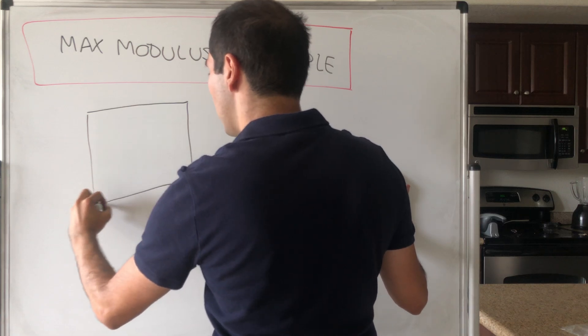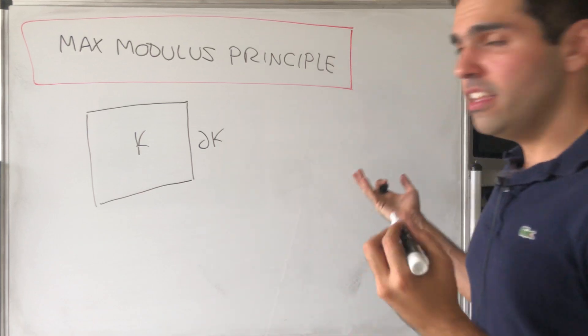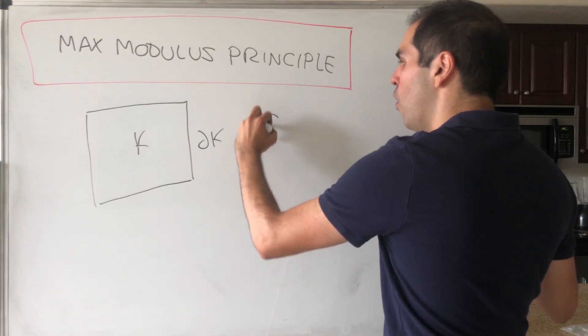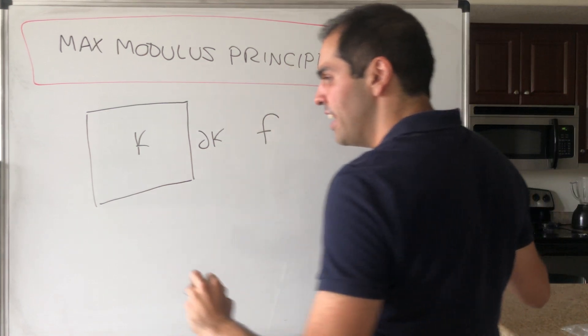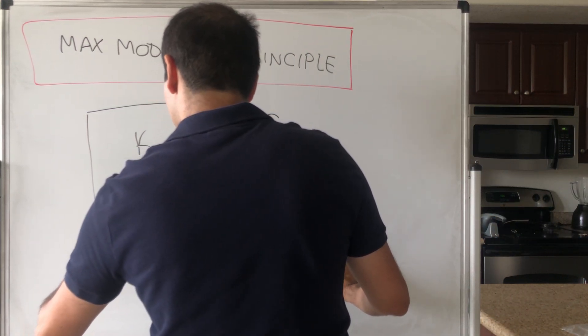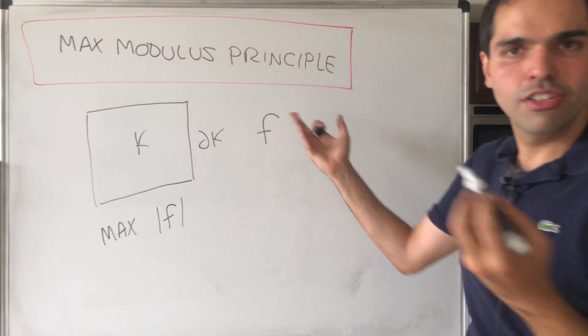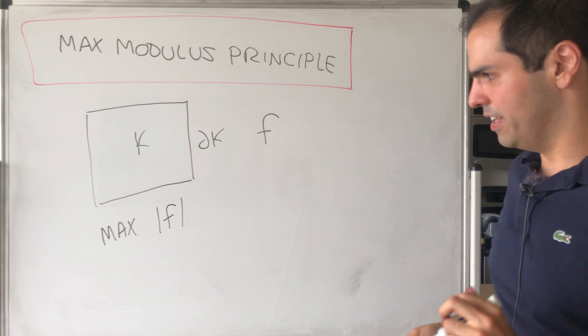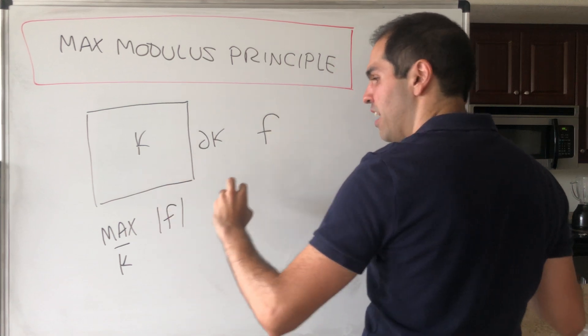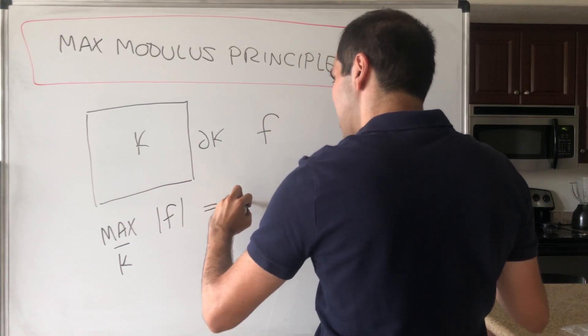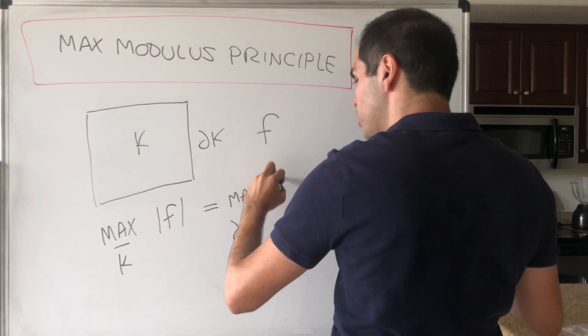Suppose you have a closed and bounded set K with boundary ∂K, and suppose you have a holomorphic or complex differentiable function f. Then it turns out the maximum of the absolute value of f—otherwise we can't really say maximum for complex numbers—on the whole set K with the boundary is just equal to the maximum of the function on the boundary.